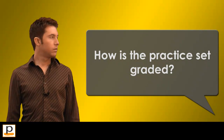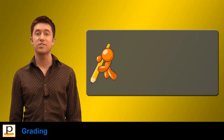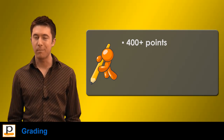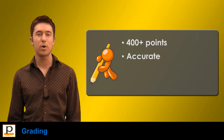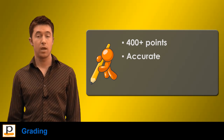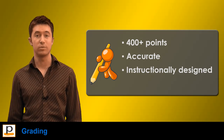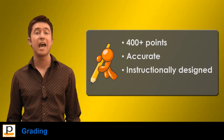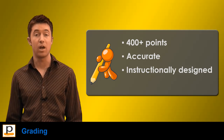How is the practice set graded? Our Peachtree virtual tutor practice set is graded out of over 400 points, providing a much more accurate picture of a student's performance than is possible with manual grading. The points are weighted by our instructional designers to reflect each item's level of difficulty and the frequency with which students have already completed similar items.